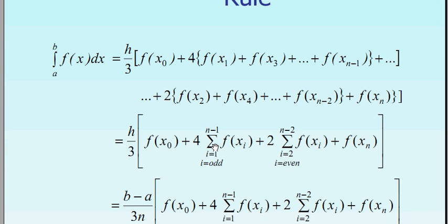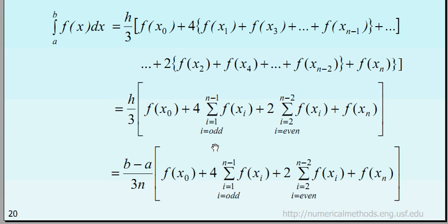If we solve this, then we will get the final formula for Simpson's one-third for n points. This is the general form for any given function f(x) for Simpson's one-third rule. So we need just to put the values here and we will get the answer.